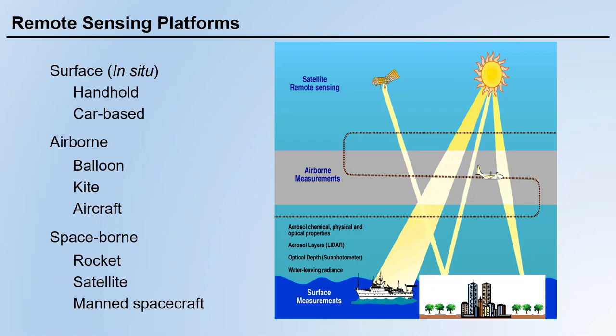Then we have the second category, which is airborne, which means we use aircraft such as a plane or drone to carry sensors to fly in the sky. In history, we also used balloons or even kites to do that.